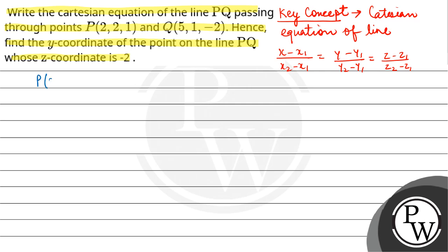So here we have coordinates (2, 2, 1) and Q(5, 1, -2). So Cartesian equation is going to be X minus 2 upon 5 minus 2, Y minus 2 upon 1 minus 2 equals to Z minus 1 upon -2 minus 1. That is, we can write it as X minus 2 upon 3 equals to Y minus 2 upon -1 equals to Z minus 1 upon -3 equals to lambda.